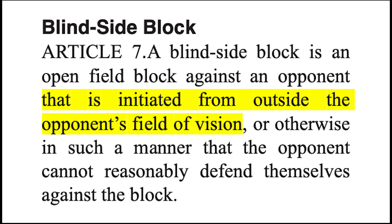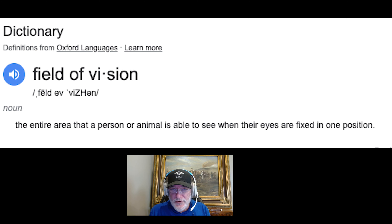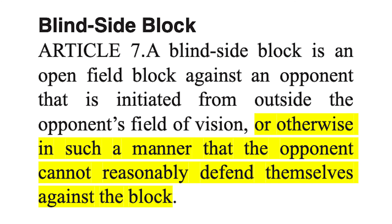A blindside block is an open-field block against an opponent basically outside their vision who cannot reasonably defend themselves. A blindside block is not necessarily illegal. What does 'field of vision' mean? It's the entire area a person is able to see with their eyes — when I did some further research, it was about 170 to 200 degrees.